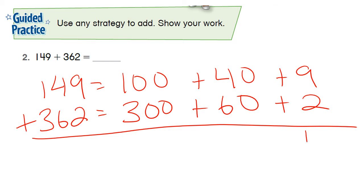So 9 plus 2 is 11, 40 plus 60 is 100, 100 plus 300 is 400. Add all those up: 400 plus 100 is 500, plus 11 is 511. So 149 plus 362 equals 511.